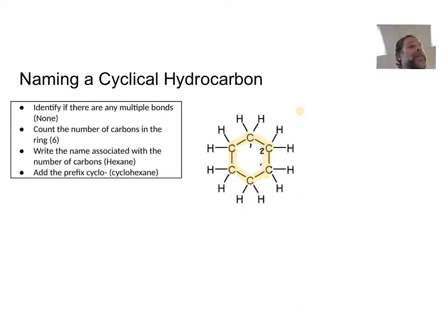So one, two, three, four, five, six. So it's six carbons long. There's all single bonds, so I know that it's an ane. And because it's six carbons long, it's a hexane.